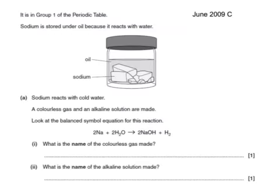Here's a past paper question. Sodium stored under oil because it reacts with water. Sodium reacts with cold water, makes a colourless gas, and an alkaline solution are made. What's the name of the colourless gas made here? It would be hydrogen. And the name of the alkaline solution would be sodium hydroxide.